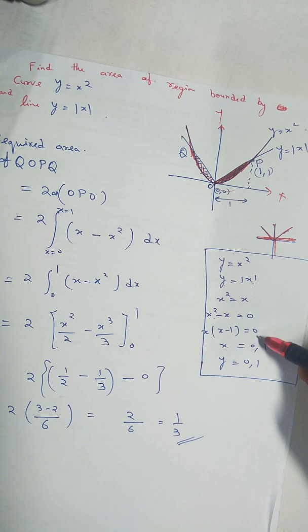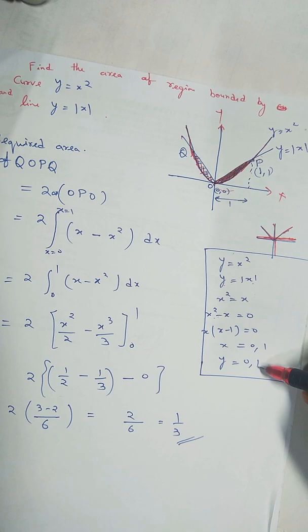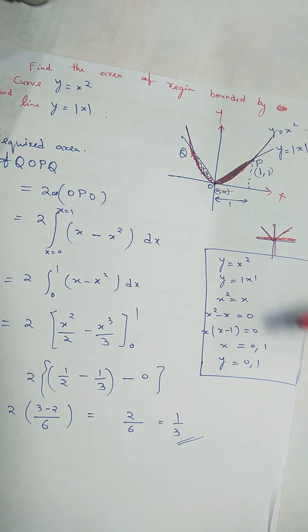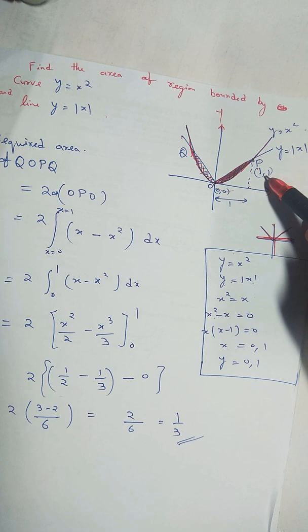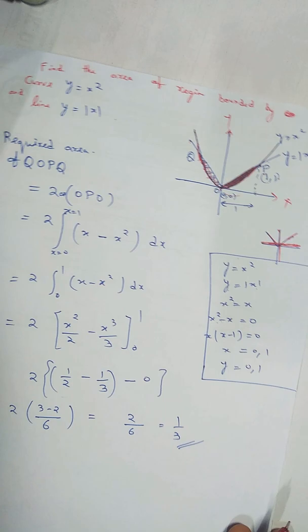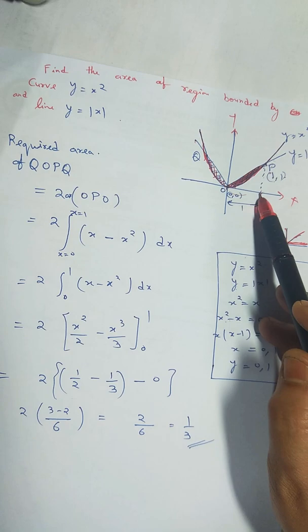Then value of x is 0 and 1. Then definitely value of y is 0 and 1. When x is 0, y is 0 - this one. And another one is x=1, then y=1. Then definitely this point P coordinates are (1,1). So this distance is 1. So for finding the limits, the limit is 0 to 1.